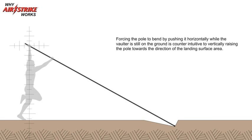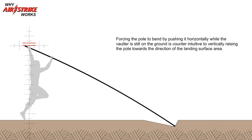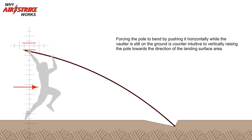Forcing the pole to bend by pushing it horizontally while the vaulter is still on the ground is counterintuitive to vertically raising the pole towards the direction of the landing surface area.